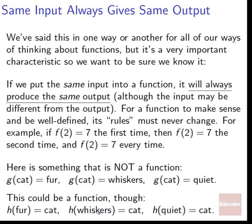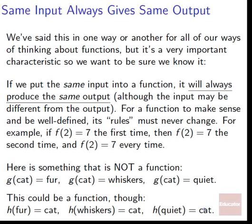Here is something that is not a function. g of cat equals fur, g of cat equals whiskers, g of cat equals quiet. This can't be a function — we've got three totally different destinations when we plug in cat. There's no reason to use one set of rules versus another, so it's not a function. However, we could have a function where h of fur, h of whiskers, and h of quiet all go to cat. It's fine to land on the same place — what's not allowed is one input going to two different locations.